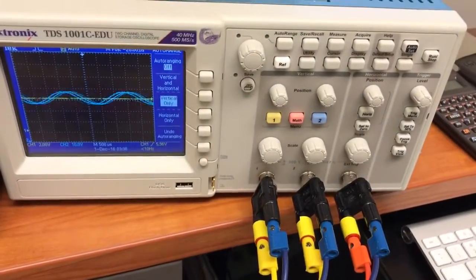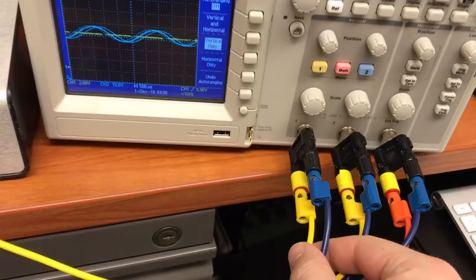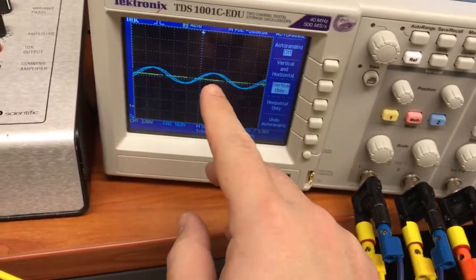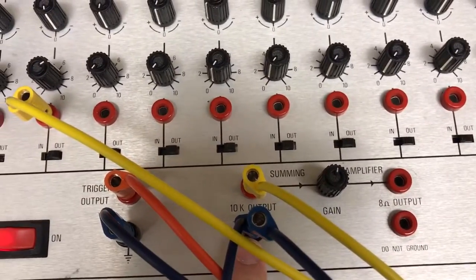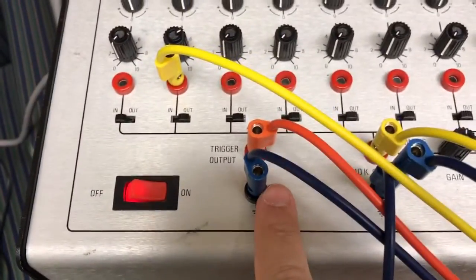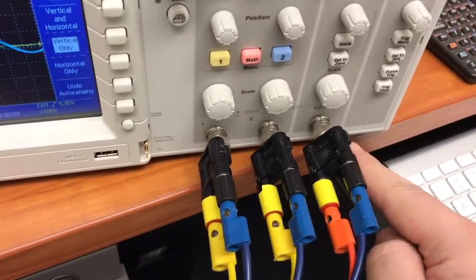We also have the oscilloscope over here. The way I have this set up is channel 1 is the yellow waveform and it is the summed output. Then we also have a trigger that's connected over here.